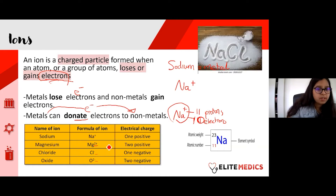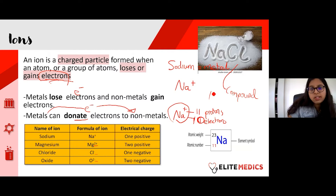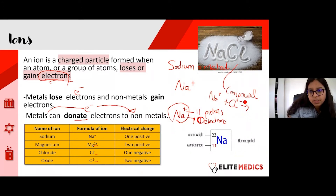When metals donate electrons, they form compounds. Sodium forms an Na⁺ ion and chlorine forms a Cl⁻ ion. Because sodium has a 1+ charge and chloride has a 1− charge, they attract each other and form NaCl — which is basically our table salt.